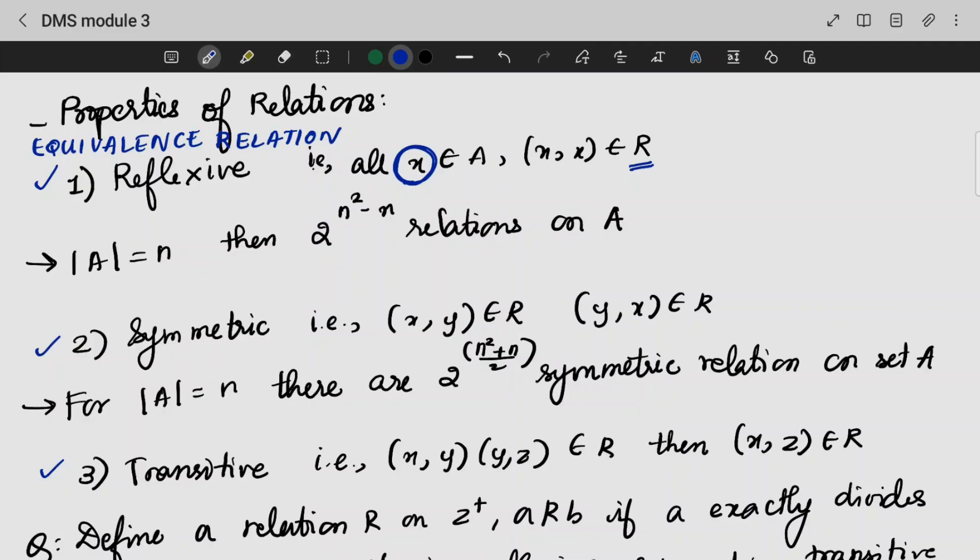For one set A, the number of reflexive relations is 2 raised to n square minus n.